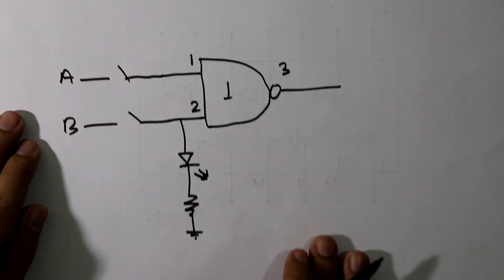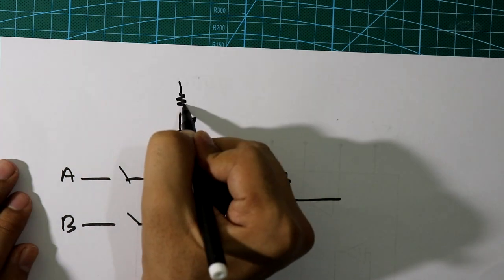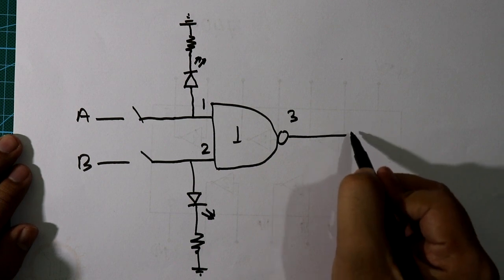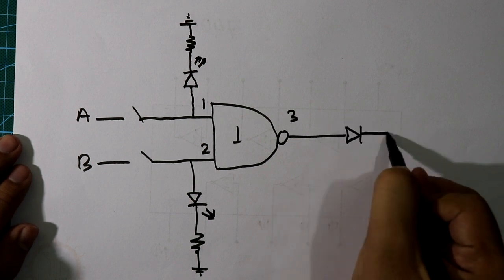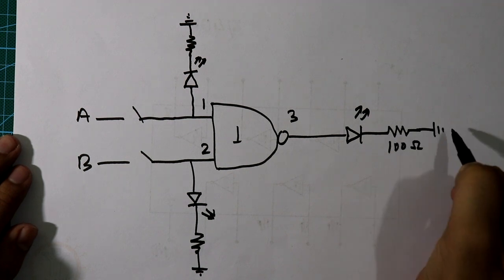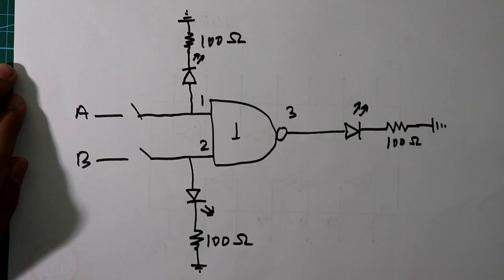So whenever the switch is closed, this LED will glow. 100 ohm resistor is connected in series with the LED, then it goes to ground. For this also, with the output we will connect one output LED, and then connect 100 ohm resistor and it will connect to the ground.